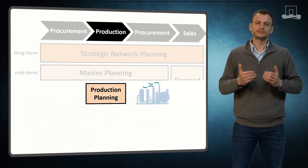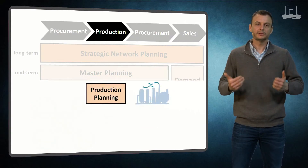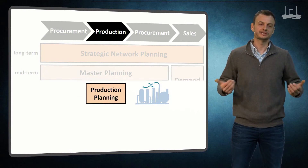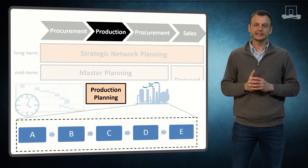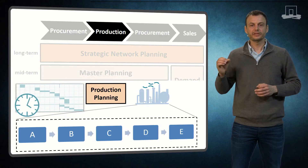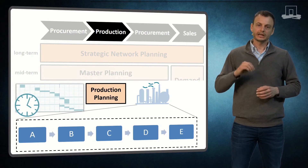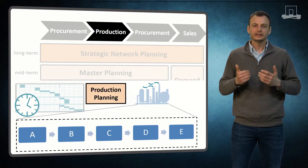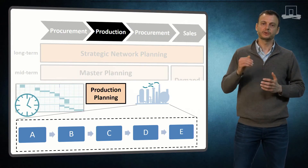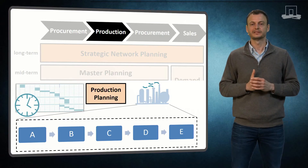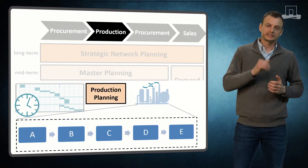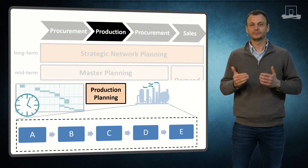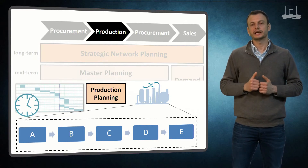While master planning coordinates flows between sites, production planning and detail scheduling take place within each site or production unit. Production planning activities are guided by decisions of the master planning. In production planning, the shifts, the machinery group, and the flow lines are decided. Bottlenecks are identified and potential solutions are found. In case the sequence of machinery and lot size decisions are sequential, both production planning and detailed scheduling are performed simultaneously.